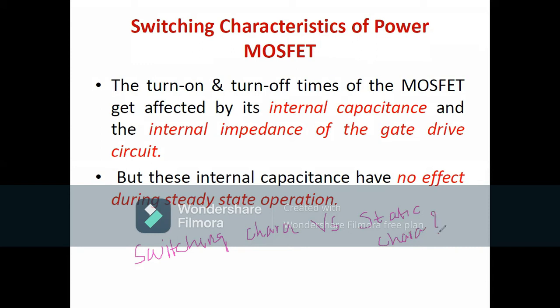I'll be telling you the difference between switching and static characteristics. In the case of switching characteristics, we need to consider the gate drive impedance and also the internal capacitance. In the case of static characteristics, we are not at all bothering about the internal capacitance. You know that in a MOSFET there is a gate capacitance that we do not consider in static characteristics, and we are also not bothering about the internal impedance of the gate driver circuit.